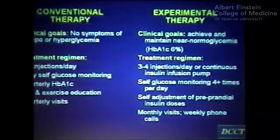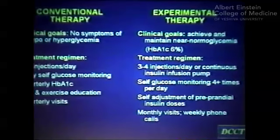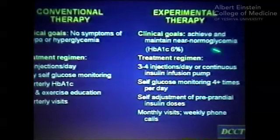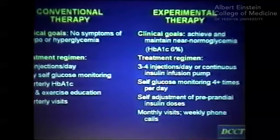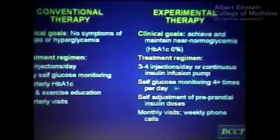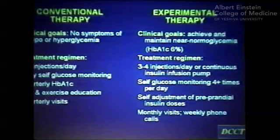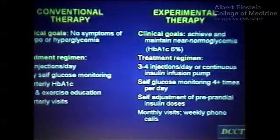The two regimens compared were: conventional therapy directed towards avoidance of symptoms, with quarterly visits, general information about diet and exercise, and quarterly hemoglobin A1Cs; and intensive therapy aimed at achieving and maintaining near-normal glycemic levels — a hemoglobin A1C of approximately 6% — using complicated regimens with multiple injections or insulin infusion pumps, frequent self-glucose monitoring, and training patients to adjust their own preprandial insulin doses. This was extremely labor-intensive, requiring monthly visits, weekly phone calls, and extensive interaction between participants and staff.